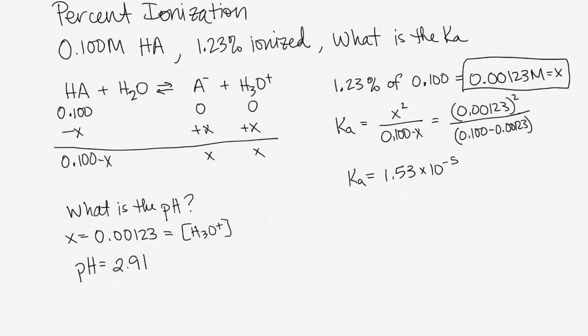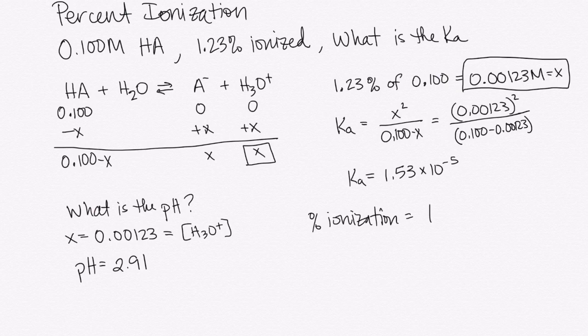Now, the last thing that they could ask us is rather than telling us the percent ionization, they might give us the pH and ask us for the percent ionization. Well, that's pretty straightforward as well because remember, our pH is just the negative log of the H3O plus concentration. So if we need our percent ionization, it's just 10 to the minus pH, which is the same as our H3O plus concentration, divided by our initial concentration, and then times 100 percent.